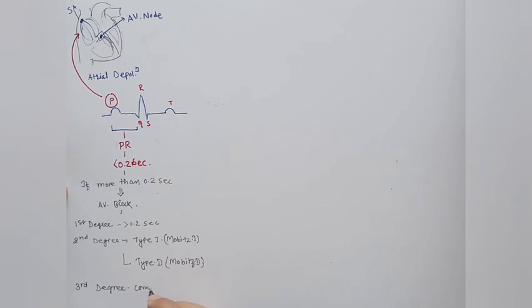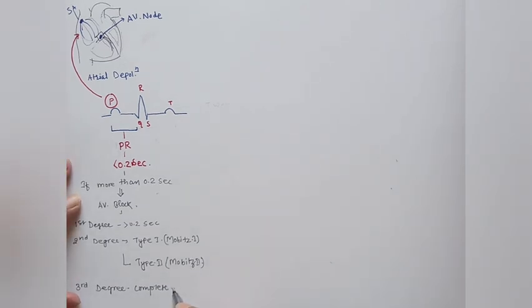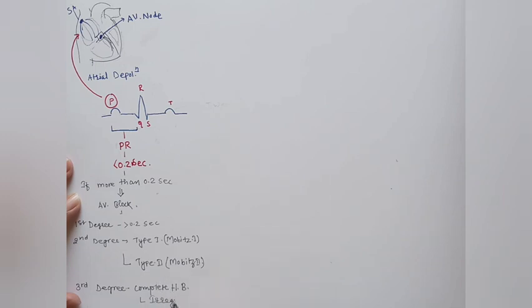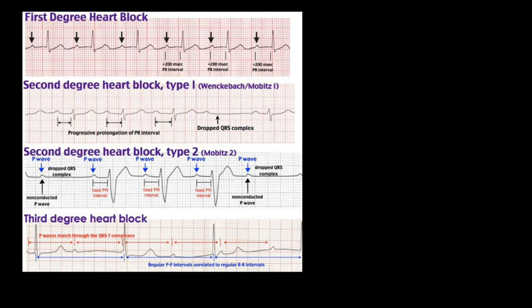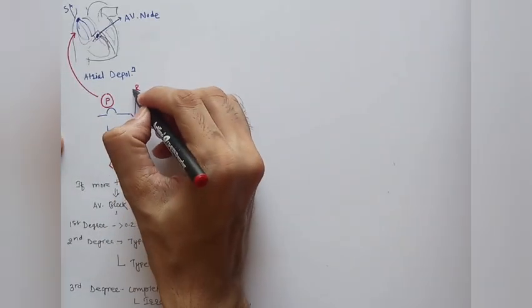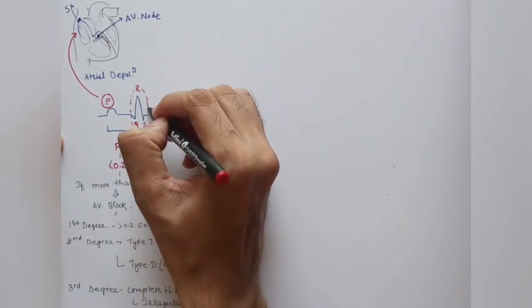In third degree heart block, there is no connection between atrial and ventricular activity. The atria depolarize on their own and the ventricle depolarizes on its own — complete heart block. Comparing with other heart blocks, we see that the P-to-P and R-to-R intervals are constant but they occur independently of each other.